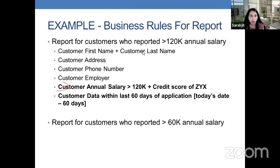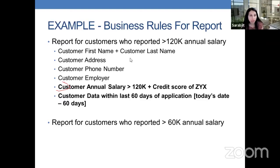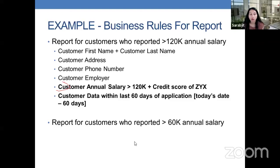An example of business rules for a report: a customer report for customers who report less than $120,000 in salary. This is a batch report that a bank or lender may be running on their back end. On this type of report, you would have customer first name, last name, address, phone number, employer, customer annual salary less than $120K, plus a credit score, and customer data within the last 60 days of the application — today's date minus 60 days. These are the types of batch jobs your source systems may be running in the background, so when you're moving everything over, be mindful of those reports.